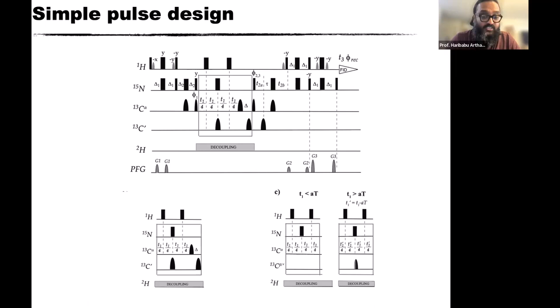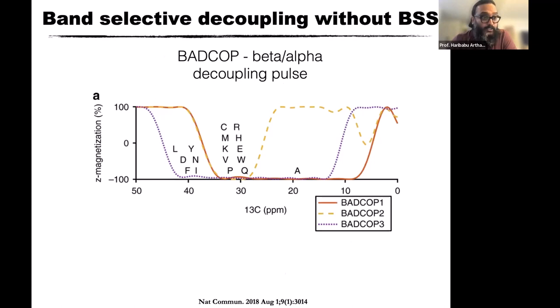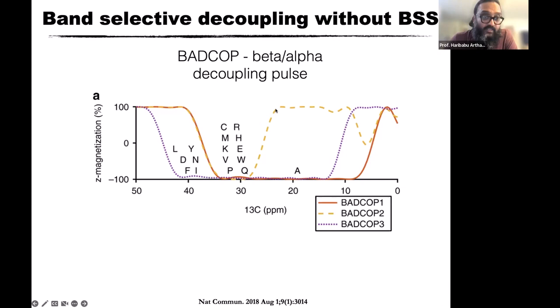Depending on which pulse you use, in a C-beta frequency-dependent manner you get different peak shapes. Without any decoupling you see pairs of doublets. Depending on the pulse, you get either a singlet or a doublet. This is done using samples grown in glucose — no pyruvate labeling required. For lysine, all three pulses — red, purple, and yellow — decouple, giving a perfect singlet. For alanine, purple and red decouple but yellow doesn't, since it doesn't cover alanine's C-beta frequency, so you get a doublet with yellow and a singlet with purple and red.